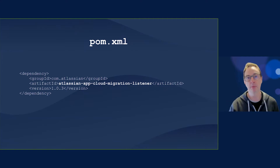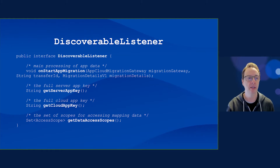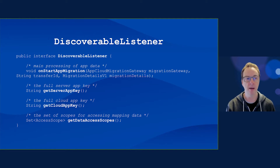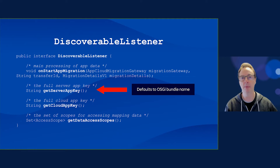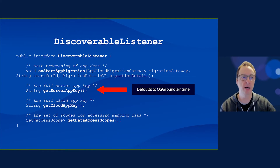The DiscoverableListener has four methods that you need to implement: onStartAppMigration, getServerAppKey, getCloudAppKey, and getDataAccessScopes. One thing to note is that getServerAppKey has a default implementation that defaults to your OSGI bundle name. If this is different to your server app key, you must override and provide a server app key. The cloud app key must match your cloud app key in Marketplace — this helps provide the glue between server and cloud, especially during testing and in production migrations.